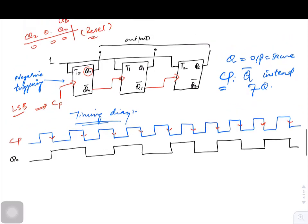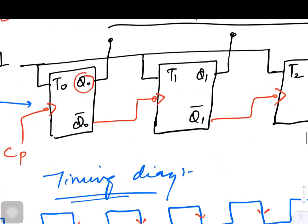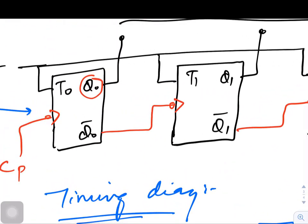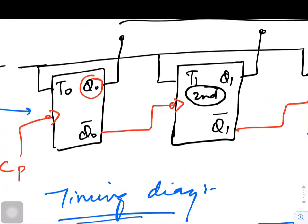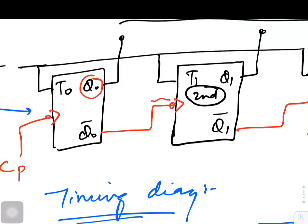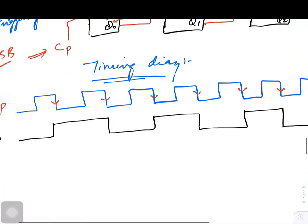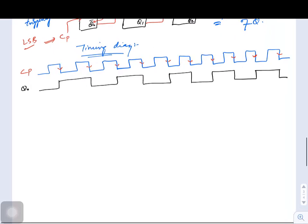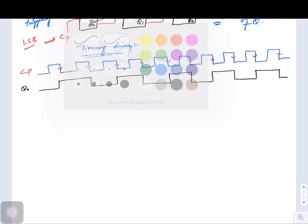Now, Q0 is not the clock pulse for the second stage. If I look at the second stage, the clock is coming from Q0 bar, so I should be interested in Q0 bar. Q0 bar will be the opposite of Q0. If this is zero, this value should be one, and if Q0 value is one, this should be zero. So simply we have to draw a waveform that is completely opposite of Q0.